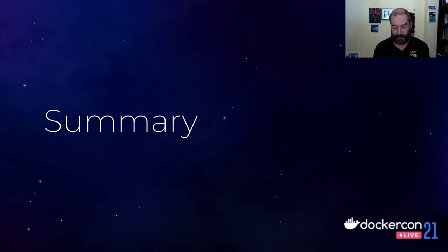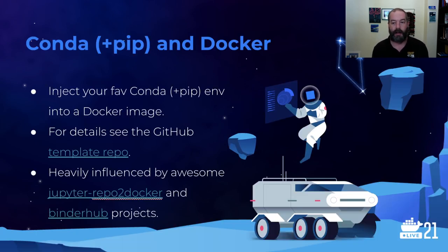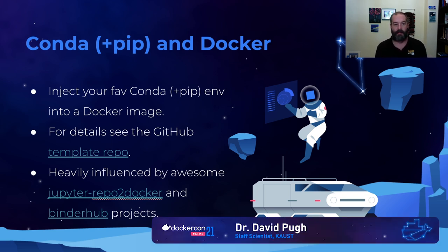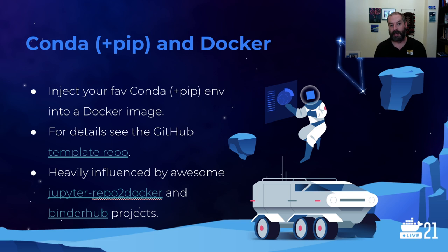In summary, I covered what I call the Conda plus PIP and Docker approach. The core idea is to use tools that data scientists, machine learning engineers, and scientific computing people are already used to — Conda and PIP — and inject those environments into a Docker image without having to learn too much about writing a Dockerfile. You can use a template Dockerfile and just inject your Conda plus PIP environment into it. There's a template repo on GitHub that you can fork, clone, or use as a template, with all setup and documentation showing how it all works.